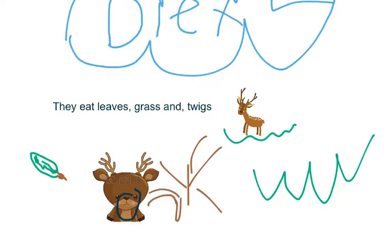This is the diet of a deer. They eat leaves, grass, twigs. There's a leaf right here.